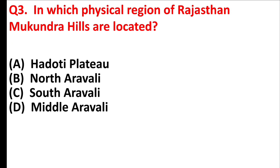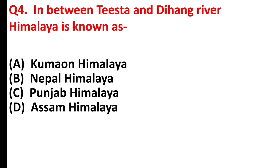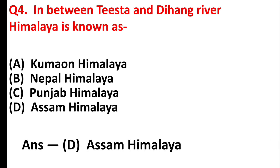In which physical region of Rajasthan are Mukundara Hills located? Answer is Option A: Haroti Plateau. In between Tista and Dihang River, the Himalaya is known as Answer is Option D: Assam Himalaya.